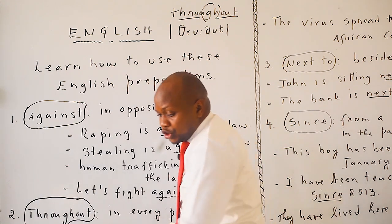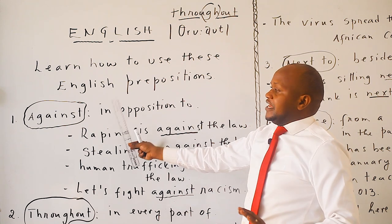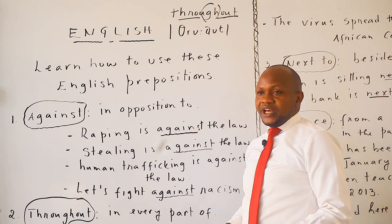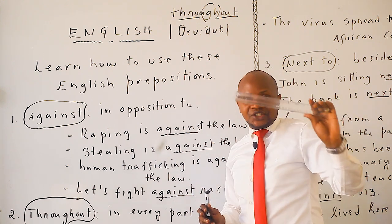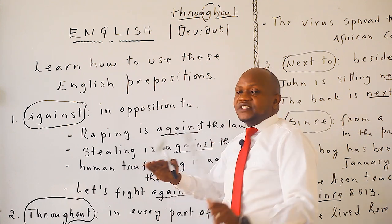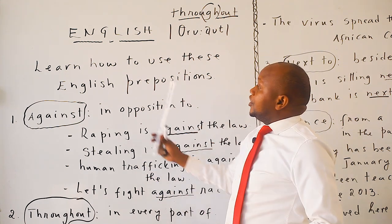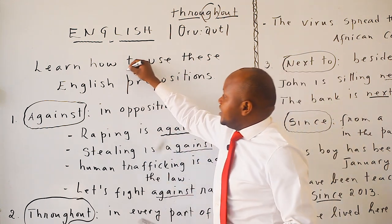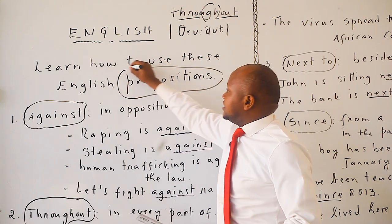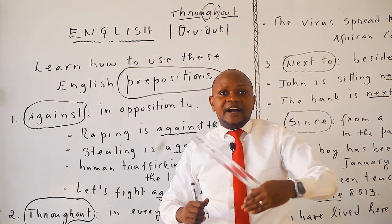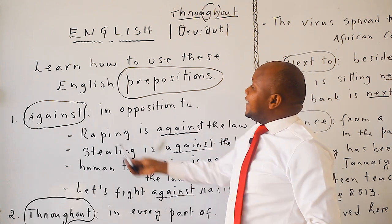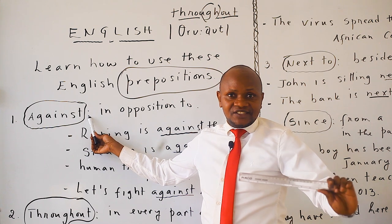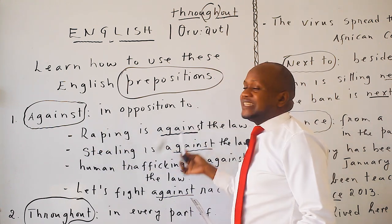Now I am going to show you how to use these four different prepositions in the English language. These prepositions are totally different. Learn how to use these English prepositions. First: 'against.' We read it as 'against.'